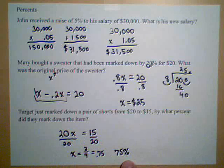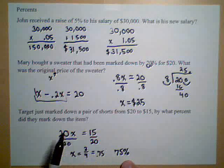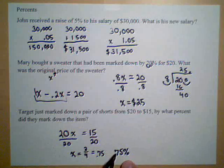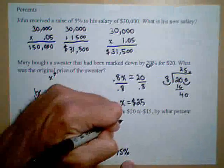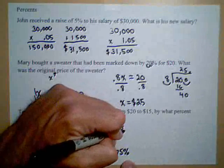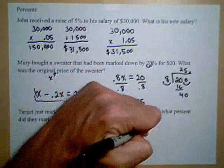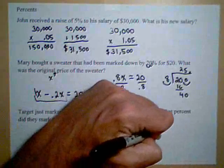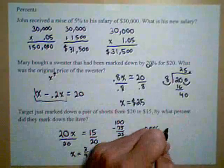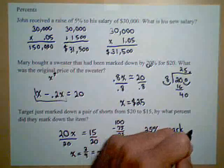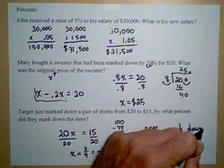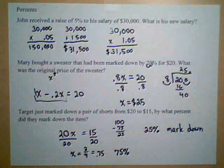But this will help us find how much it was marked down because $20 was 100% and it goes down by 25% to get to 75. So because 100 minus 75 is 25, we have a 25% markdown. And that's how we can do that.